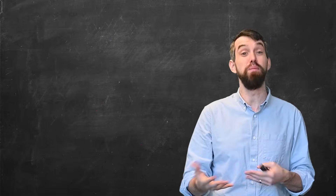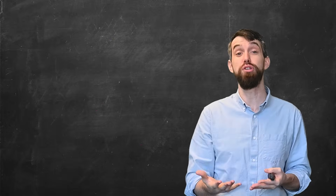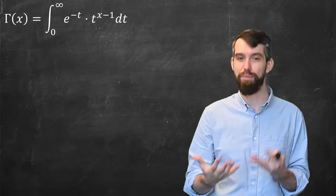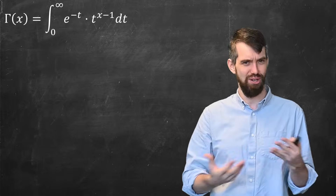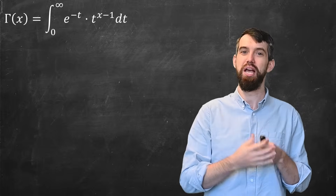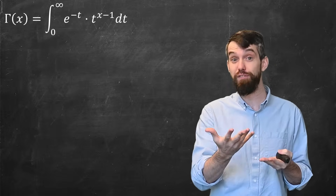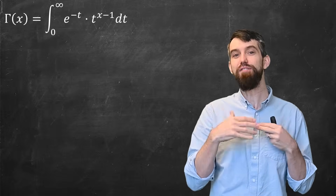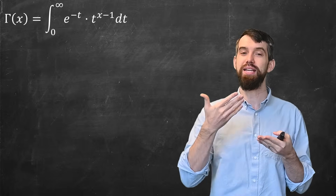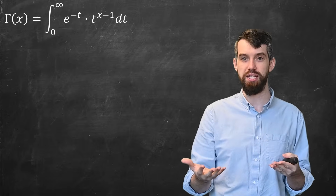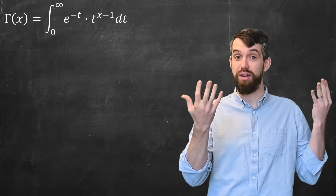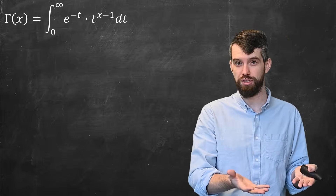Now let's do our third example. Before we do that, I want to introduce a new piece of terminology — something called the gamma function. The gamma function looks a little bit related to the Laplace transform. It's just an improper integral from 0 to infinity, very similar: the specific exponential e^(−t) multiplied by t^(x−1) dt. This is some function, and it turns out to be important enough that we give it a name, so we call it the gamma function.